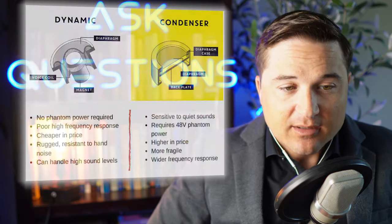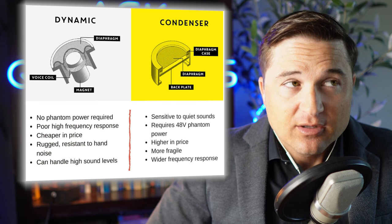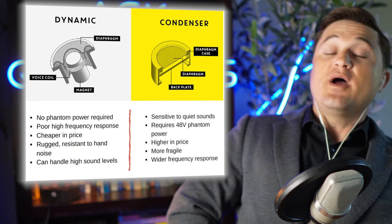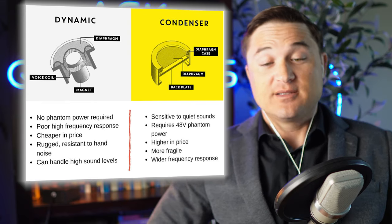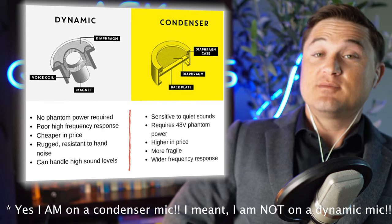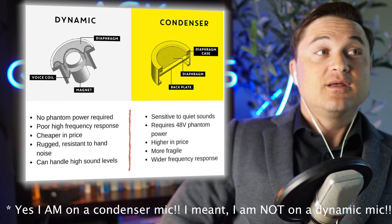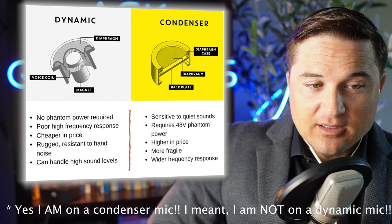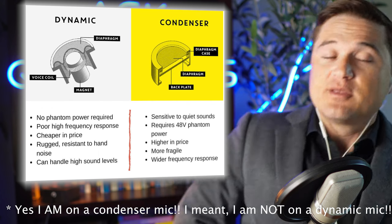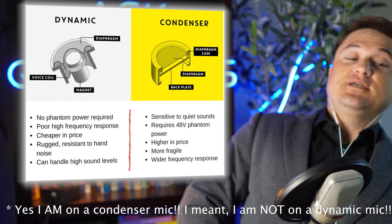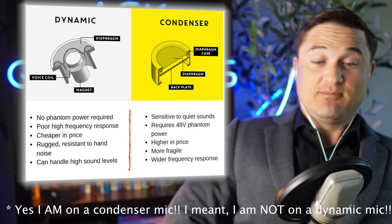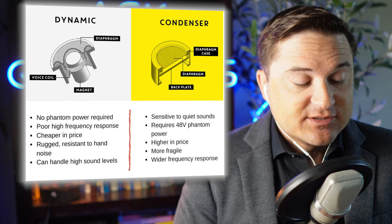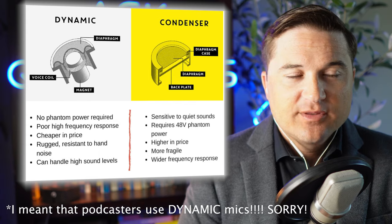With dynamic mics, you really have to be right up on them to be heard. If you get away from them — I'm trying to mirror how that would be — you can barely hear what the person is saying. A lot of podcasts use condenser mics because that helps ensure you're not picking up anything else around the room.